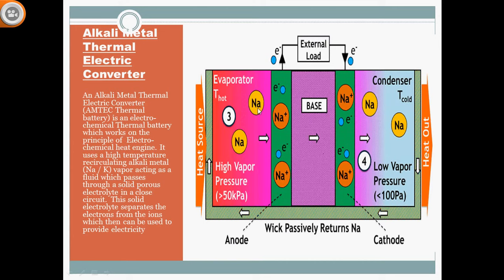The sodium vapor starts moving from the evaporator through the wick to the condenser. When it reaches the condenser, due to the lower temperature its pressure reduces, dropping to near 100 Pascals. In this way, the sodium circulates through the system.